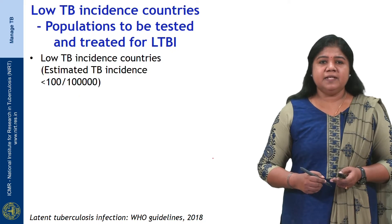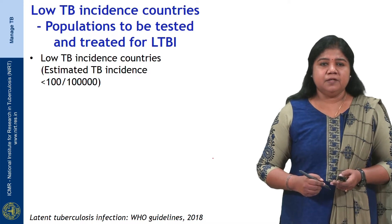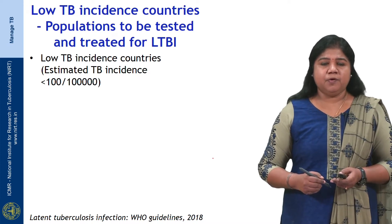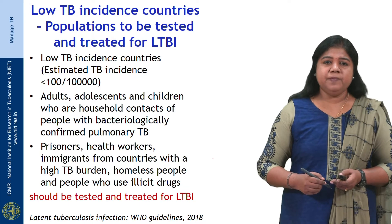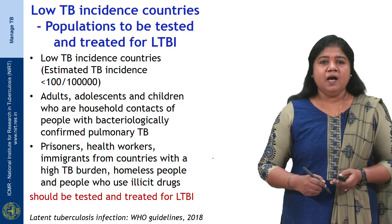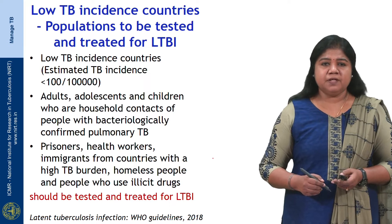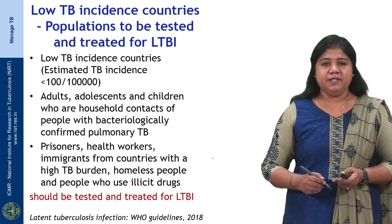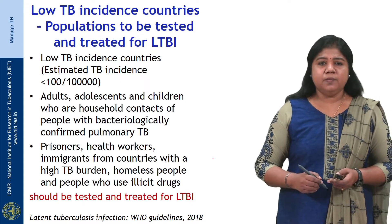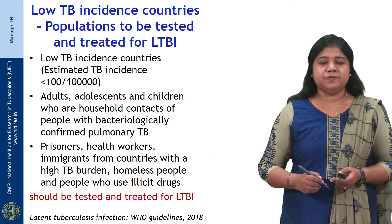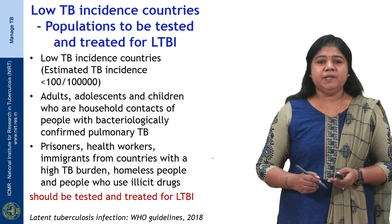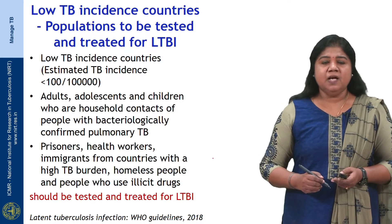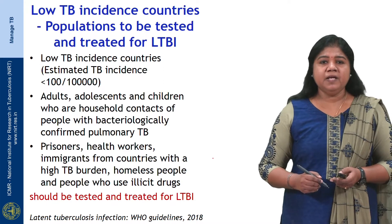In low TB incidence countries, where the estimated TB incidence is less than 100 per lakh population, the populations to be tested and treated for LTBI include adults, adolescents and children who are household contacts of people with bacteriologically confirmed pulmonary TB; prisoners; health workers; immigrants from countries with a high TB burden; homeless people; and people who use illicit drugs. These groups should be tested and treated for latent TB infection.